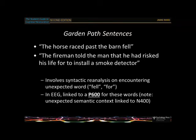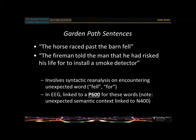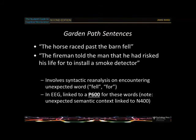Researchers often study sentence processing using garden-path sentences — sentences that are grammatical but hard to parse syntactically. For example: 'The horse raced past the barn fell' — when you get to 'fell' you think, what's that word doing there? Or: 'The man that he had risked his life for to install a smoke detector' — when you reach 'for' it's quite difficult. These require a different syntactic analysis from the one you were expecting; you have to go back and build a new syntactic tree.